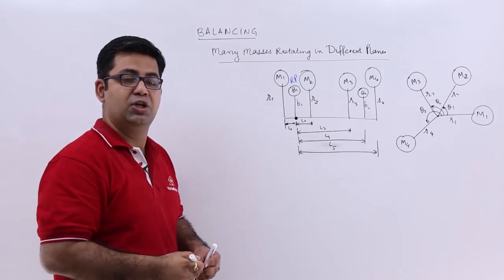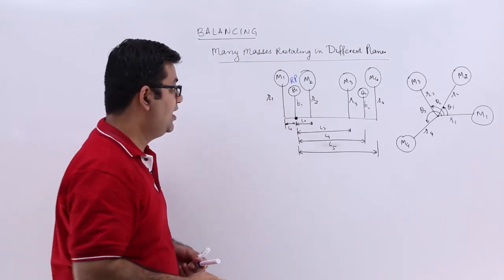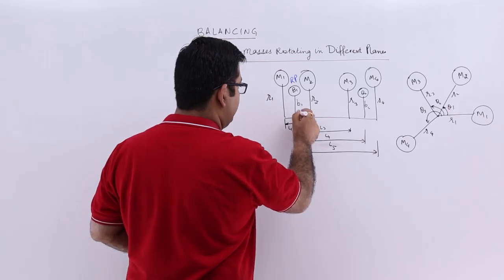So I will mark this as Rb. So all the distances are measured from this point. Let us say this point is A.